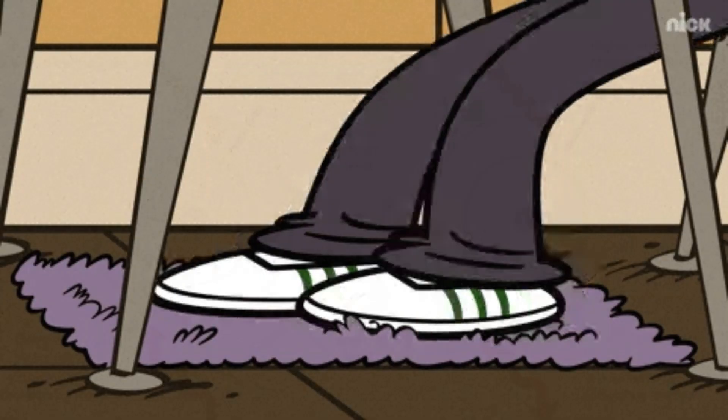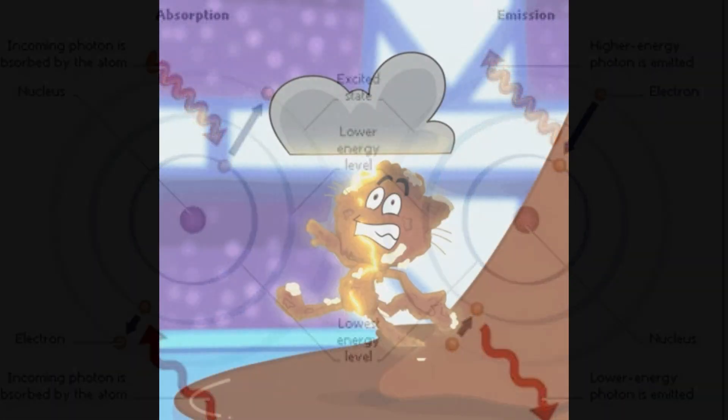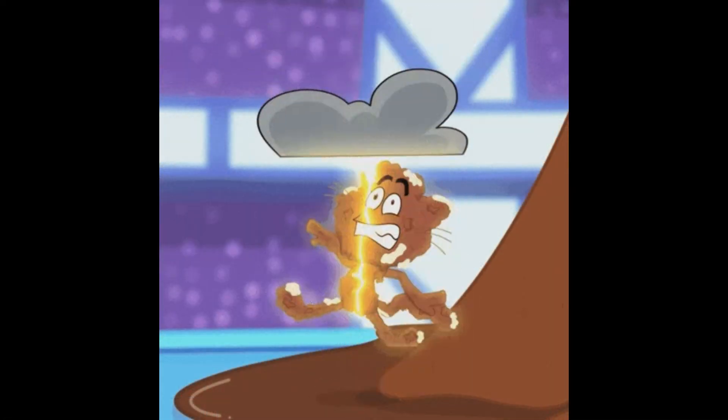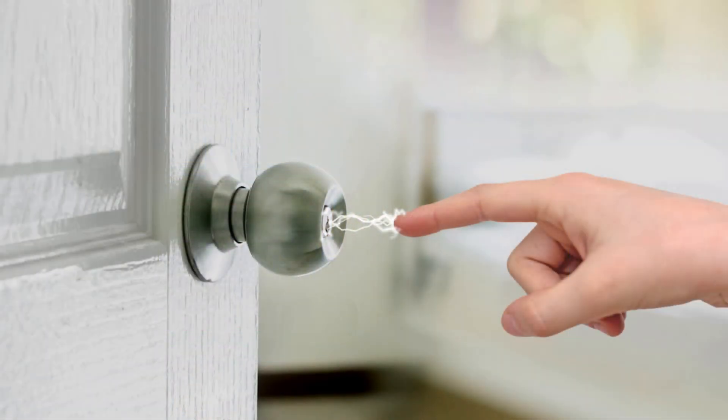How does the shock happen? When you touch another person or an object, these extra electrons quickly jump from your body to balance the charge difference. This sudden movement of electrons is what creates that tiny shock you feel. It's the same reason why you sometimes see small sparks when touching a car door or a metal object.